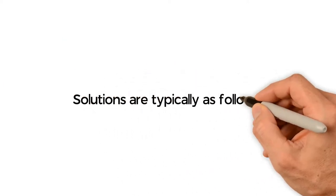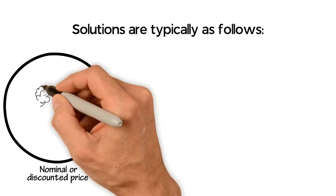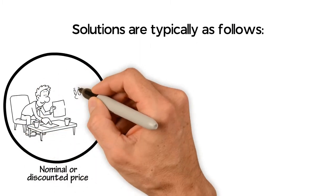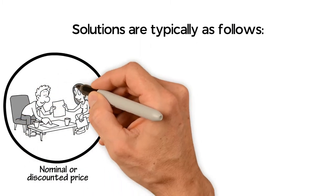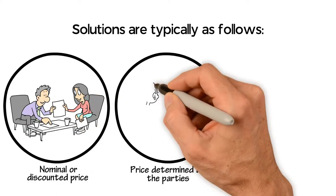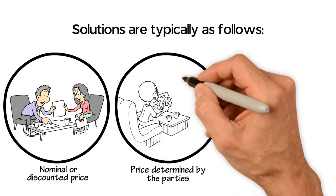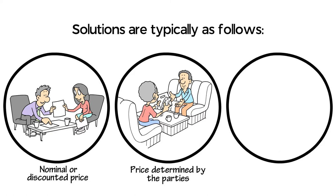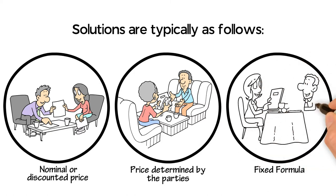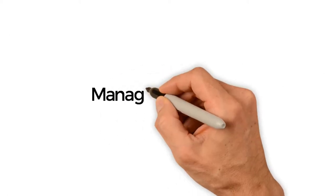Whilst the specific recourse varies, the solutions are typically as follows. Transfer of shares at a nominal or discounted price subject to the rules on penalty provisions. Transfer of shares at a price determined by the parties acting in agreement. Transfer of shares at a valuation determined by an independent valuer or a fixed formula.